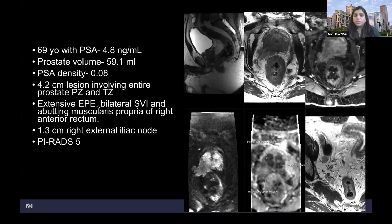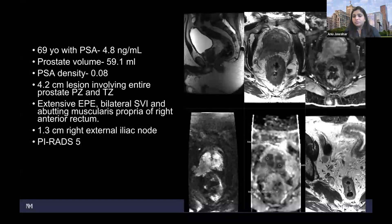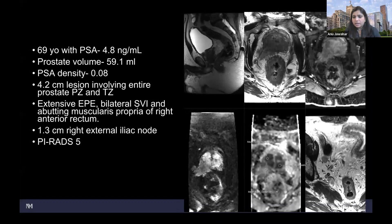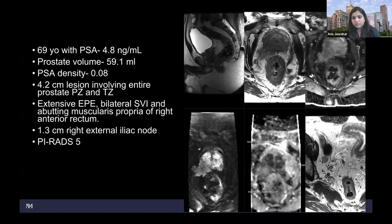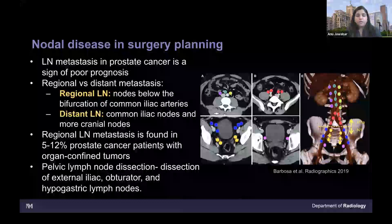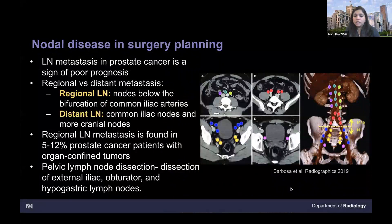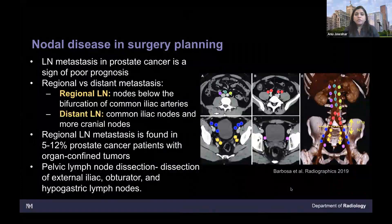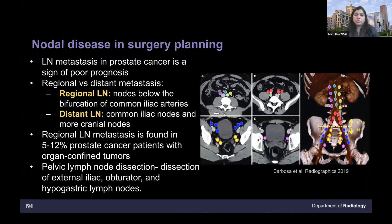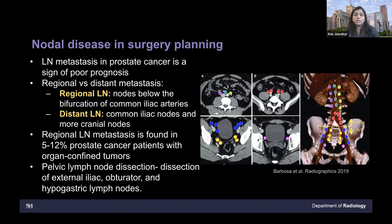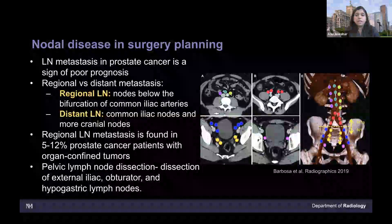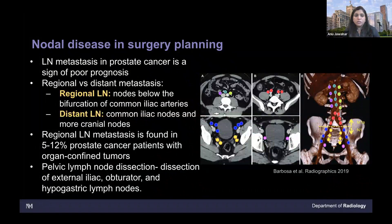The 4.2 centimeter mass is PIRADS 5. This patient also had an external iliac/obturator lymph node and an internal iliac lymph node involved. Lymph nodal metastasis is a sign of poor prognosis — it doesn't affect survival per se compared to having just an organ-confined tumor within the prostate alone, but it's a sign of poor prognosis.